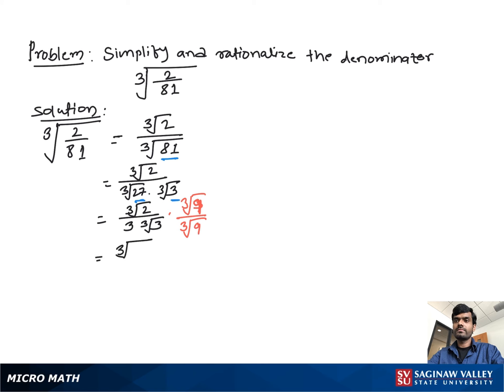Then we get cube root 18 over 3 times cube root 27. Since cube root 27 equals 3, we get cube root 18 over 3 times 3, which simplifies to cube root 18 over 9. This is our final answer.